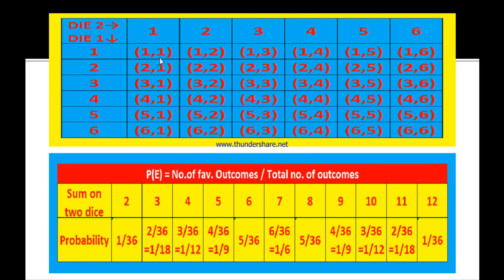The number of favorable outcomes is 1. The total number of outcomes: we have 6 columns and 6 rows, so the total number of outcomes is 6 times 6, which equals 36. Therefore, for all these questions the total number of outcomes is 36. The probability to get sum as 2 is 1 by 36.